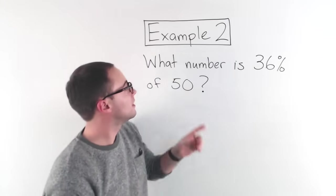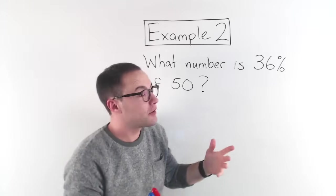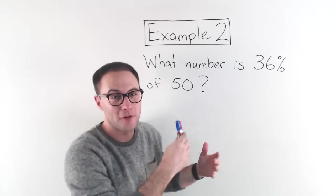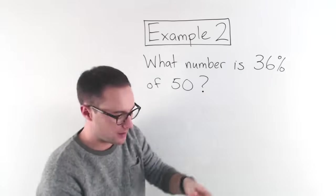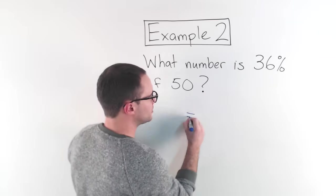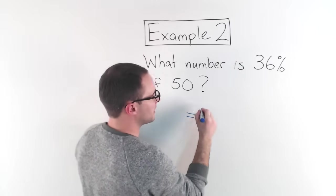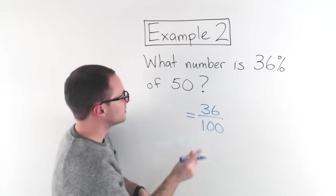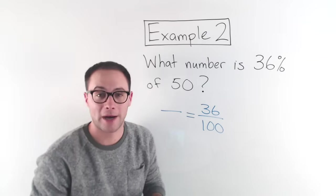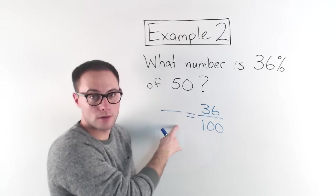Okay. Example two, what number is 36% of 50? Now it's not quite as easy as the first one. Well, we know we're not finding the percent. So anytime you have a percent, I like to just put that in my proportion just to start with. So 36% is going to be 36 over a hundred. Okay. So now I just need to figure out, am I trying to find the part or does it want me to find the whole? Right.